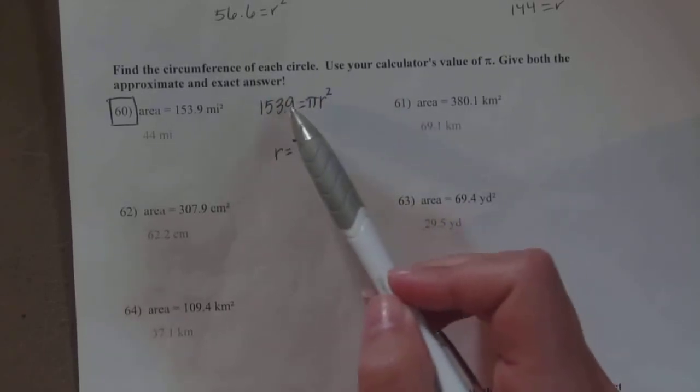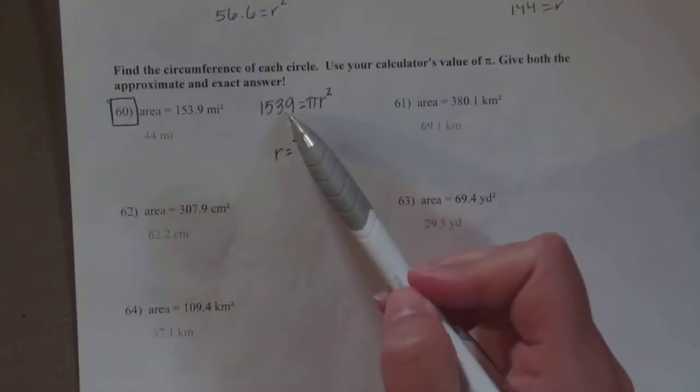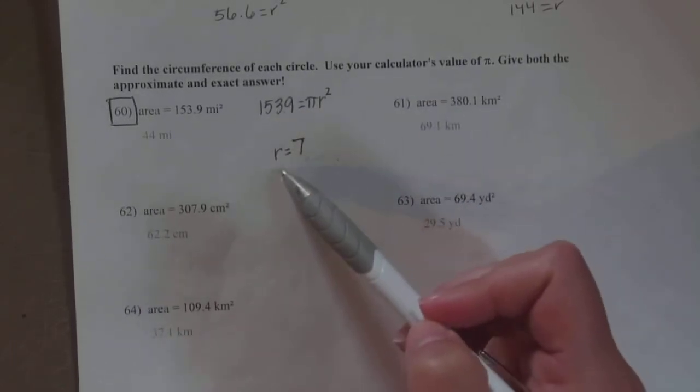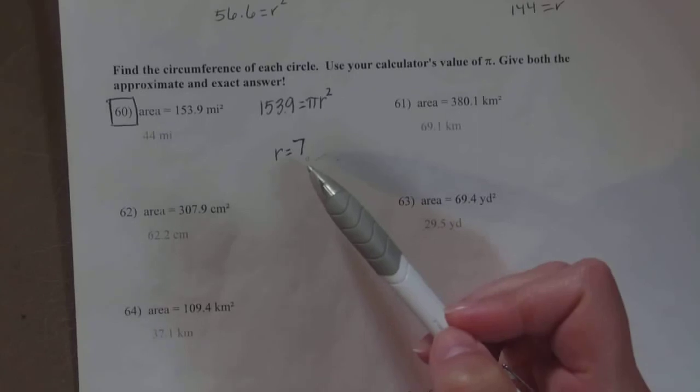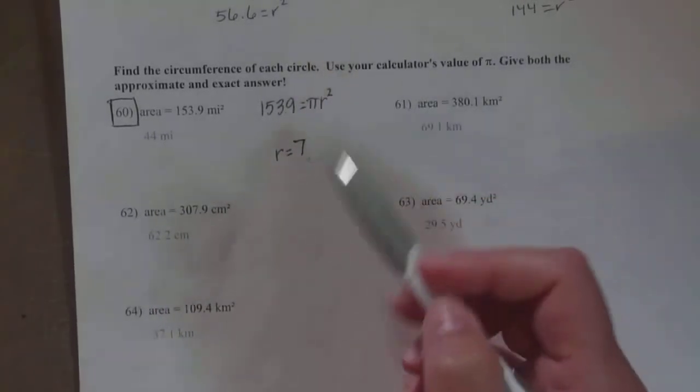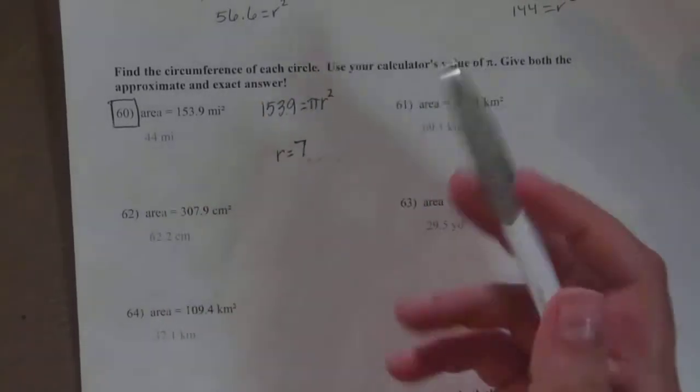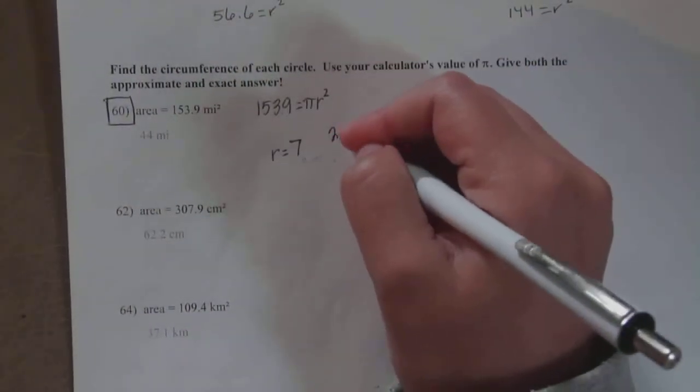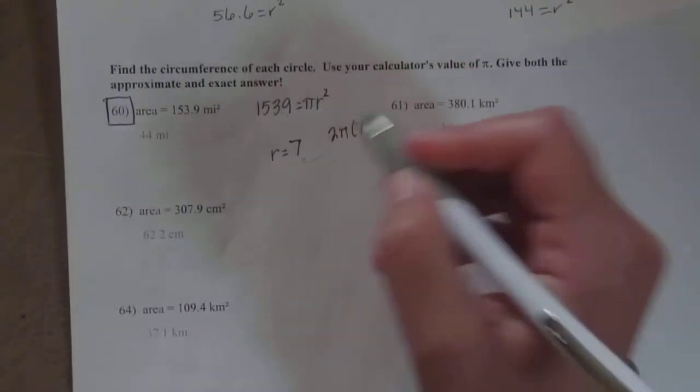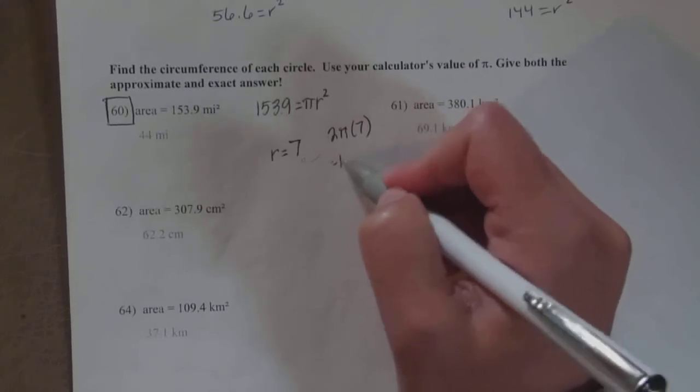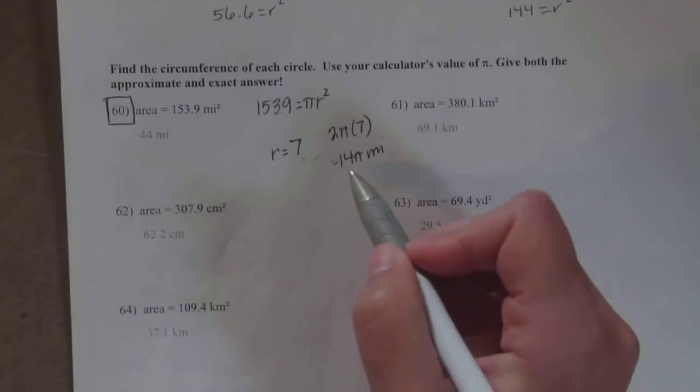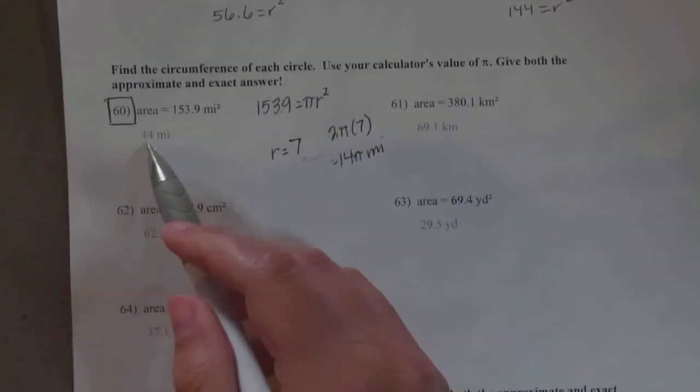If you're given the area, you have to set it equal to the formula for area. That's the equality. I can't say equal to 2πr because that's not true - this is not circumference, it's the area. You divide by π, then square root it, and you get radius is 7.00. Then to find the circumference, you plug that into the formula for circumference and you get 14π miles. That's the exact answer, and the approximate answer is 44 miles.